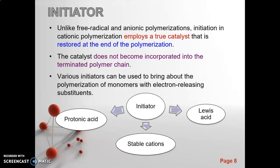Unlike free radical and anionic polymerization, initiation in cationic polymerization employs a true catalyst that is restored at the end of the polymerization. The catalyst does not become incorporated into the terminated polymer chain. We have three types of initiator: protonic acid, stable cations, and Lewis acids. For cationic polymerization, the reactive portion of the chain carries a positive charge during the process of chain growth. This active center can be either unpaired cations or cations that are paired and associated closely with an anion, which is a counter ion.